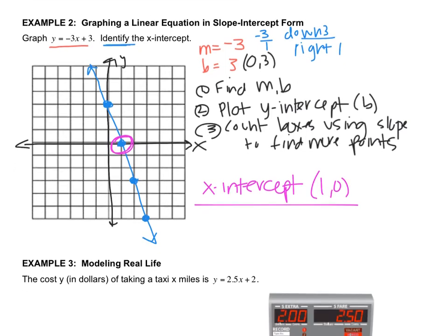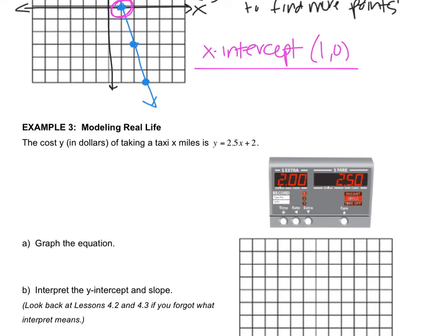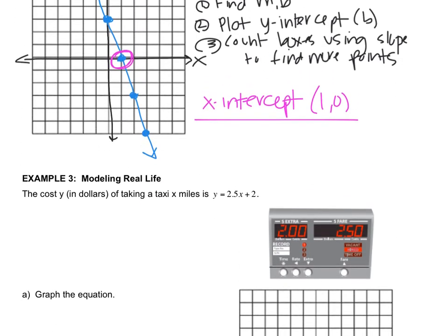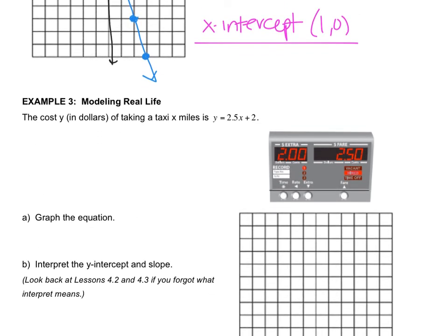Let's move on to example 3. The cost y in dollars of taking a taxi x miles is 2.5x plus 2. Letter A says graph the equation. We're going to look at our steps. Step 1 is to find the m and b. M is 2.5, but that's not really helpful. Let's turn that into a fraction. 2.5 as a fraction is 2 and a half, but the best slope is 5 halves. That's what 2 and a half is as a fraction. The b-value is 2, which we know as the point 0, 2. These are the important things we need to graph the line.